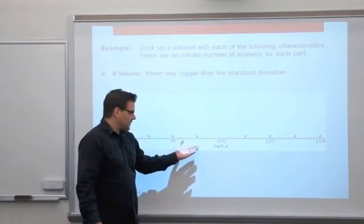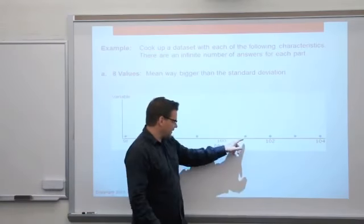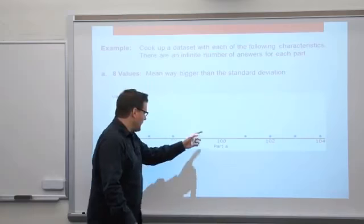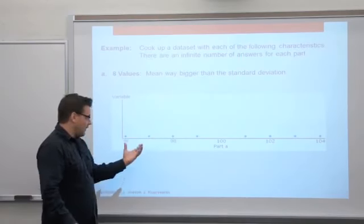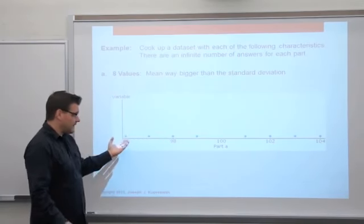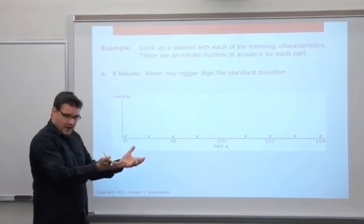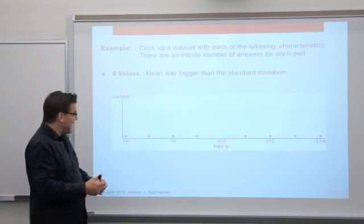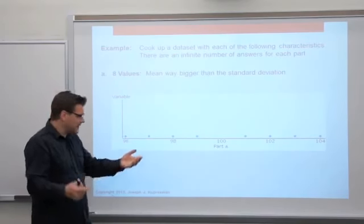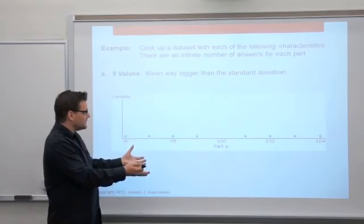Here's a dot plot, seems to be centered at about 100. I've got some data points at 101, 102, 103, 104, and a few below 100: 99, 98, 97, 96. The mean of these data points will actually be 100, and the standard deviation is like the average distance to the mean. These numbers are very close to 100.